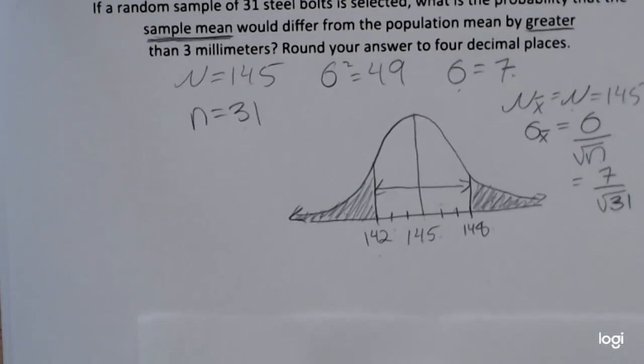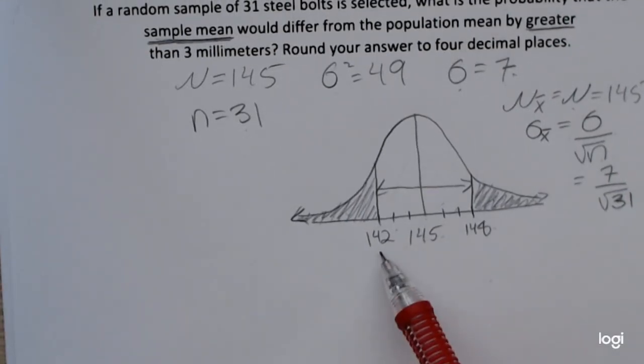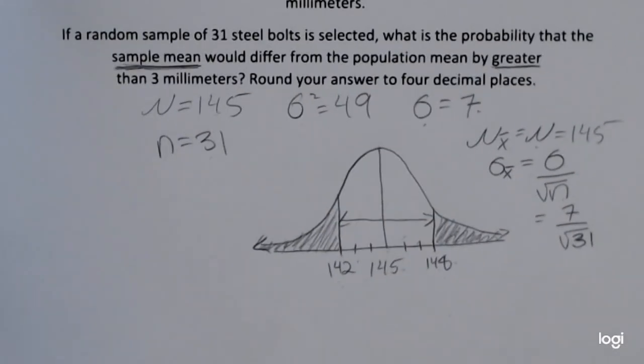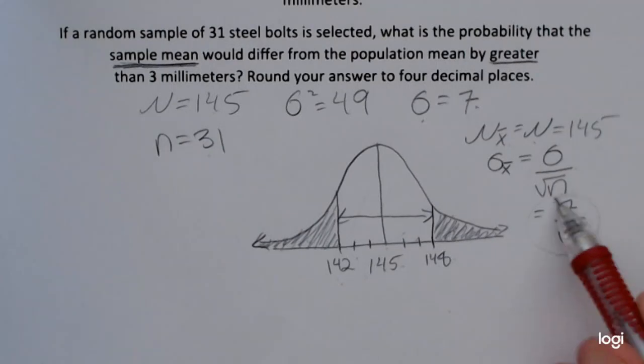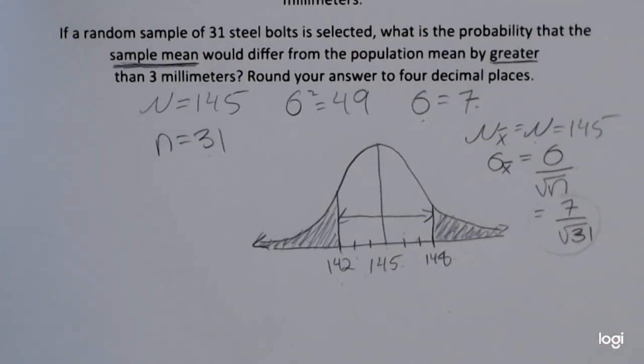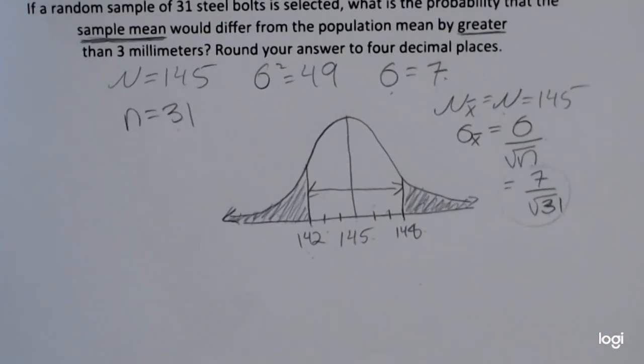I'm going to go ahead and use my calculator, but if you wanted to use your z-table, you'd have to convert these two scores, the 142 and the 148, to z-scores first, remembering to use the 7 over the square root of 31 as your standard deviation.